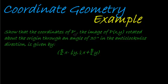Let's have a look at what it says. Show that the coordinate P', the image of point P which is (x,y), rotated around the origin through an angle of 30 degrees in the anticlockwise direction, is given by, and then it says that the coordinate of P' is given now by this.